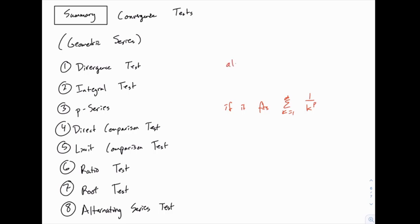Otherwise, you always want to run through the divergence test first because it's quick and easy, and you don't even have to write it down. You can just mentally check and see if the terms of the series go to zero, and if they don't, you can immediately say it diverges according to the divergence test without having to do more work.